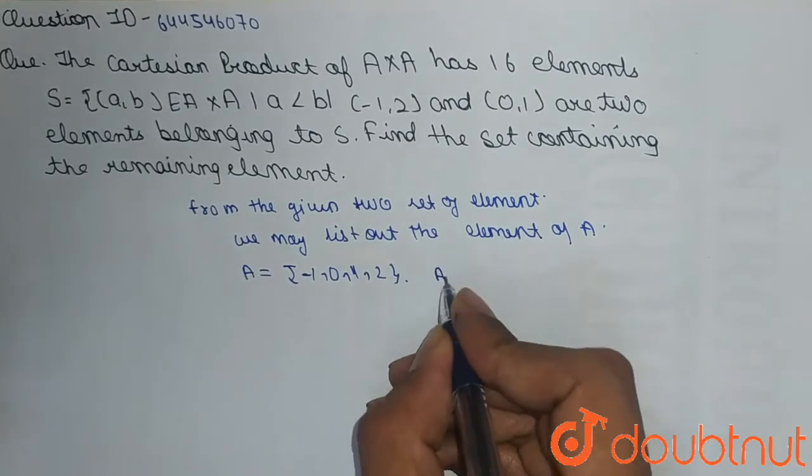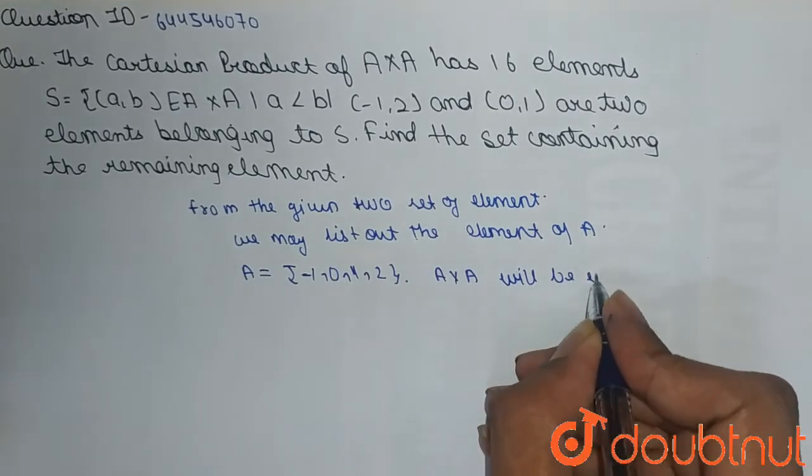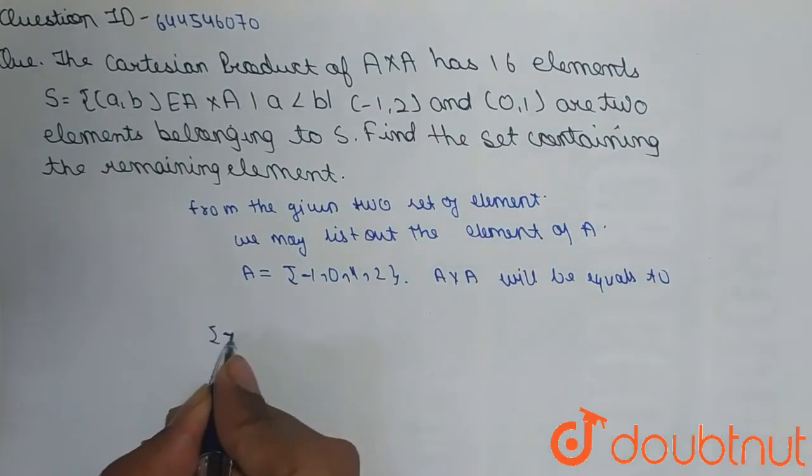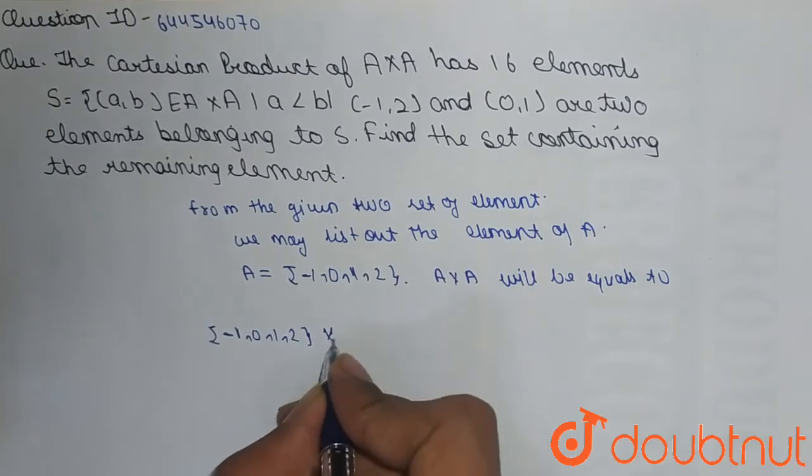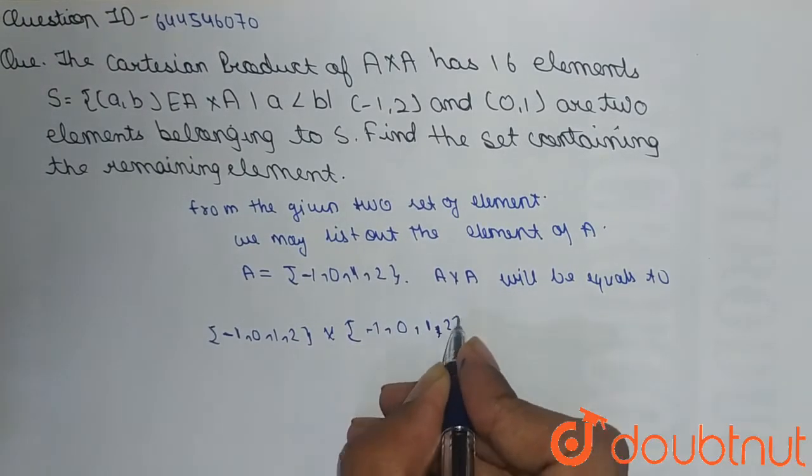Now A cross A will be equal to {-1, 0, 1, 2} × {-1, 0, 1, 2}.